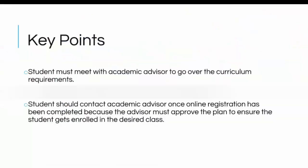Some key points you should remember are that students must meet with the academic advisor to go over curriculum requirements. Once you've completed your online registration, you need to contact your academic advisor so that they can go in and approve your schedule.